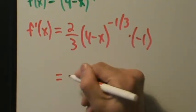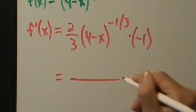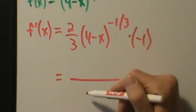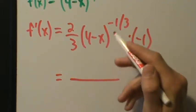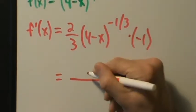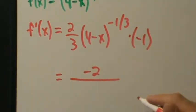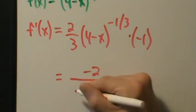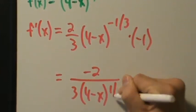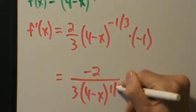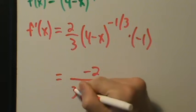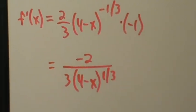Now let's rewrite that. Negative exponents can be moved to the denominator and become positive. So we have negative two on top, and on the bottom we have three times the quantity four minus x to the positive one-third. This is our derivative: f'(x) = -2 / [3(4 - x)^(1/3)].